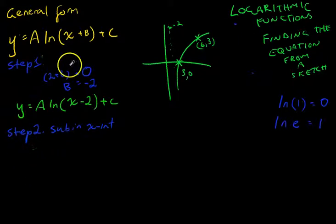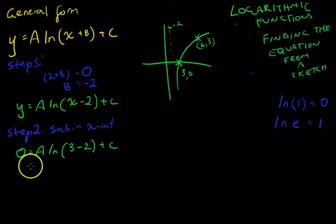So we've got y equals... I'm subbing in my x-intercept, so y is equal to 0, A ln(x) is equal to 3 minus 2 plus C.